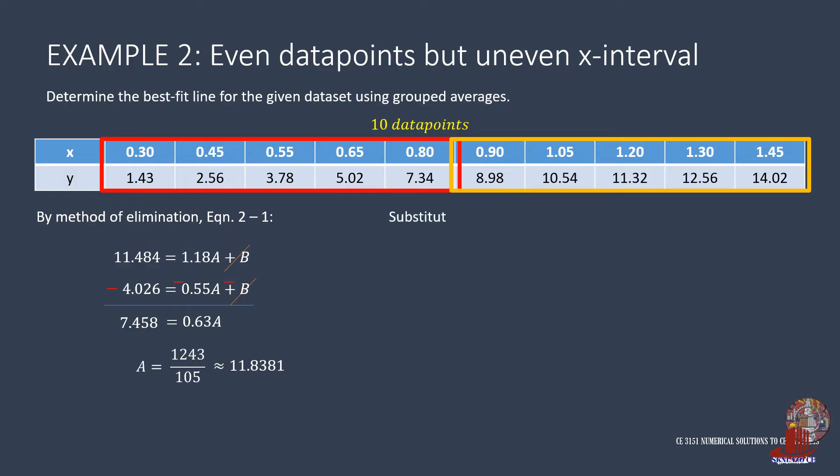Now replace a into the first equation and have 4.026 as equal to 0.55 of 1243 over 105 plus b. B is then taken as negative 2.4850. With a and b already solved, the best fit line for the data points is then y as 11.8381 of x minus 2.4850.